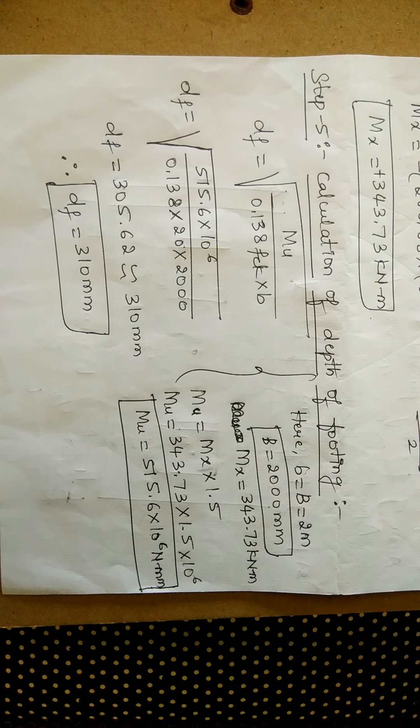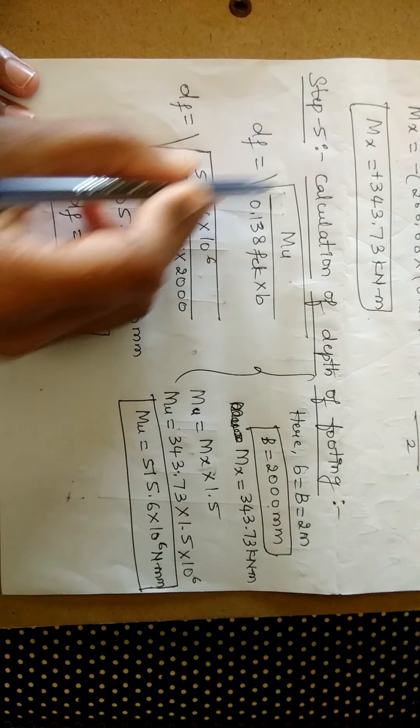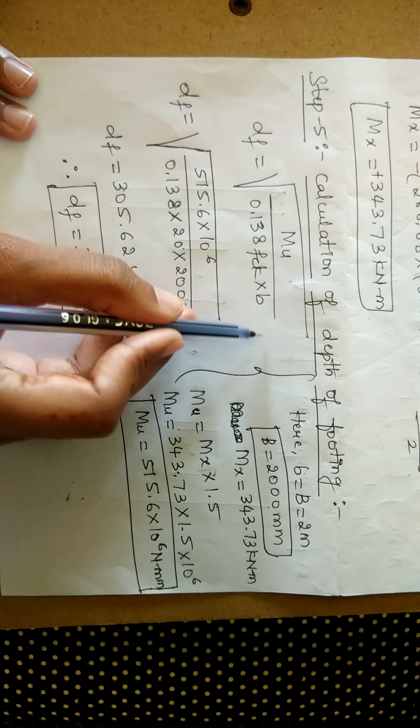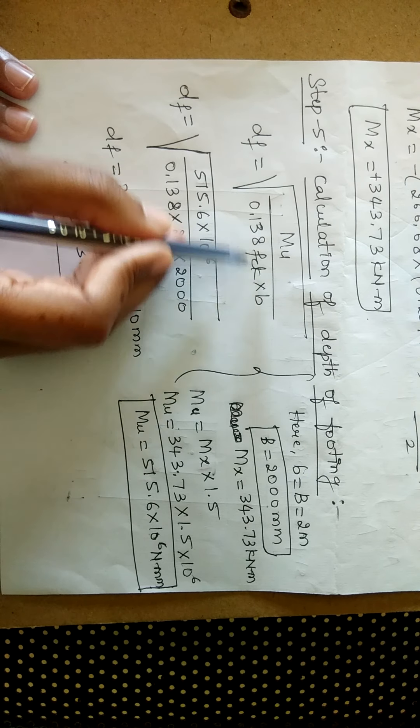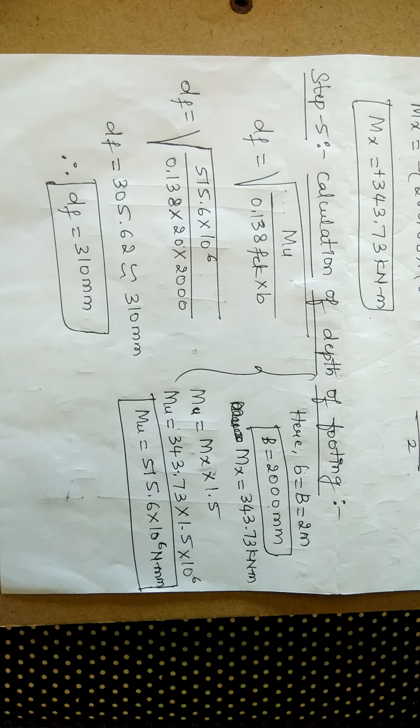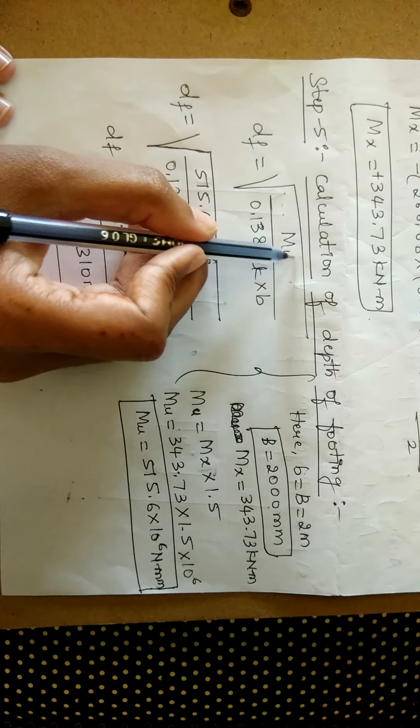Moving to the next step. Step 5 is to find the depth of the footing. Now to find the depth of the footing, the formula is df equals square root of mu divided by 0.138 fck into b. Where mu represents the maximum bending moment value.